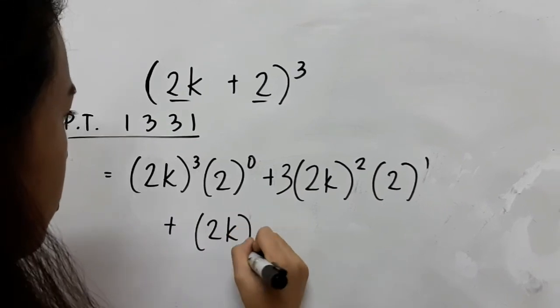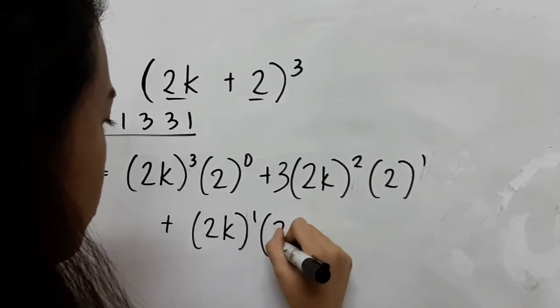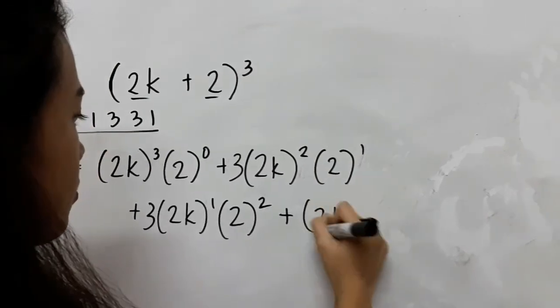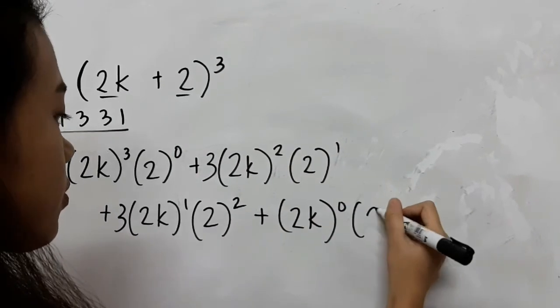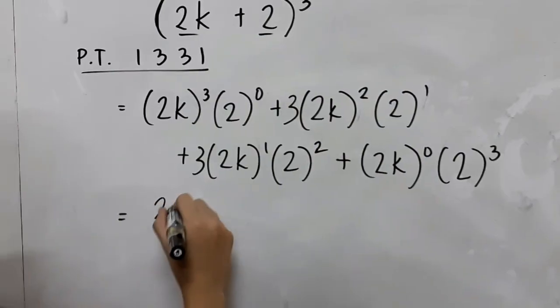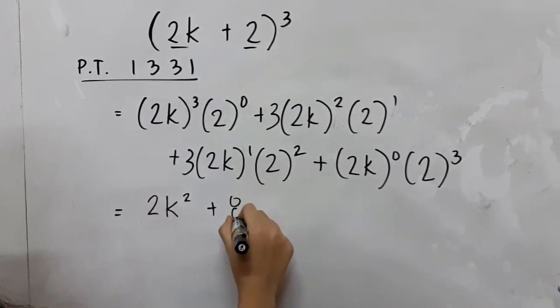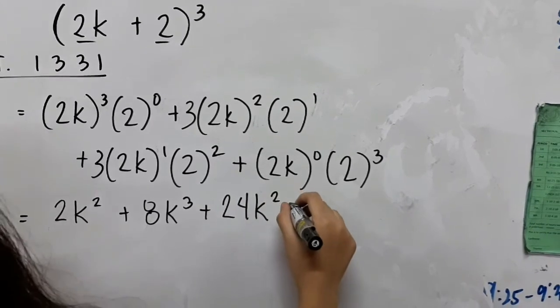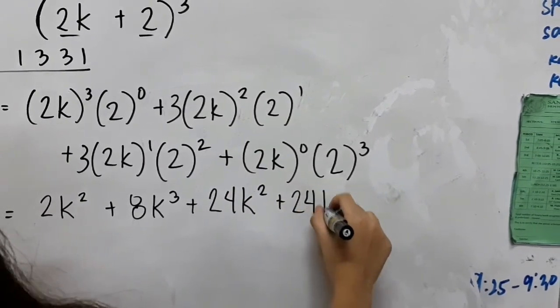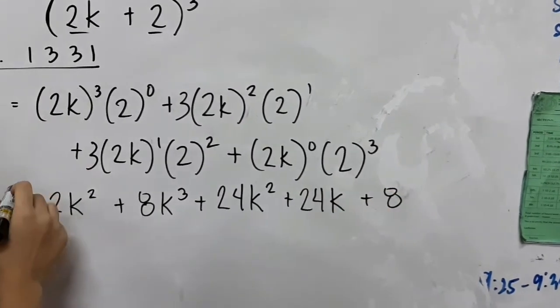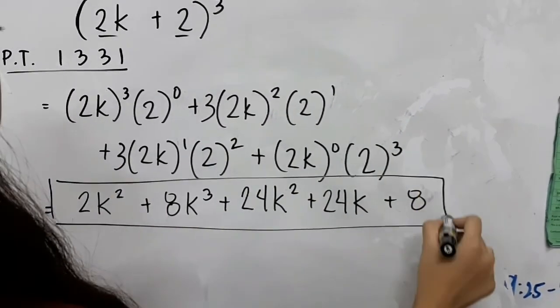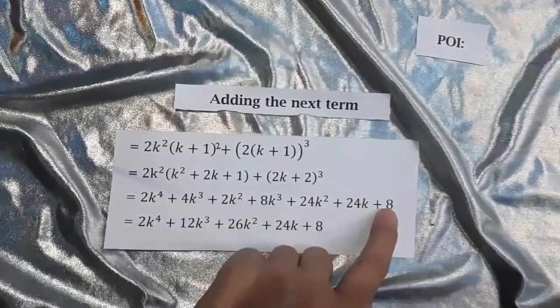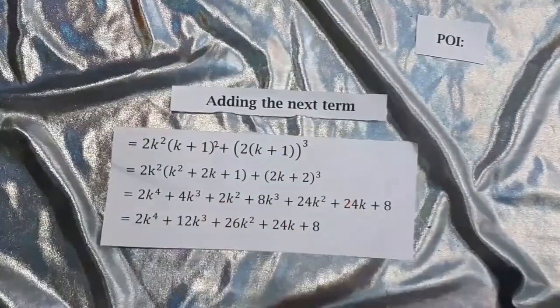For this part, we should use the Pascal's triangle or binomial expansion. That's how we got 8k³ + 24k² + 24k + 8. And then add the like terms. That's how we came up with this answer.